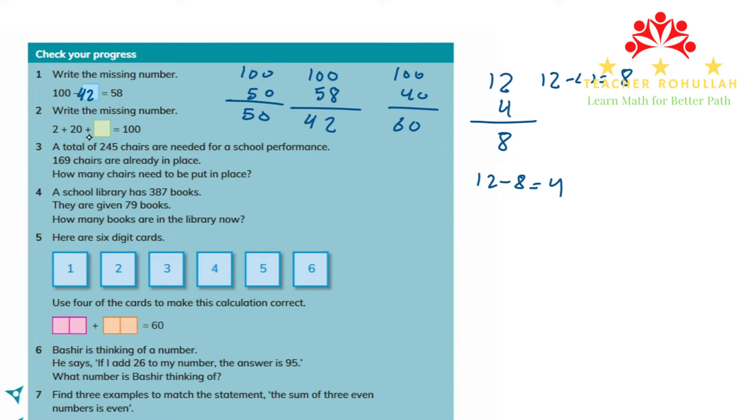In question 2 it says write the missing number. We have 2 plus 20 plus another number equals 100. 2 plus 20 is 22, and 22 plus 8 is 30, and 30 plus 70 is equal to 100. Now 78 plus 20 plus 2 gives us 100. How? 78 plus 2 is 80, and 80 plus 20 is 100. Question 2 is also solved.